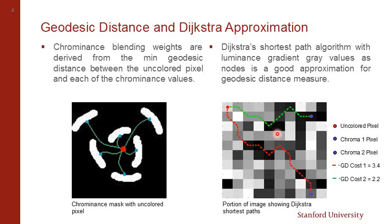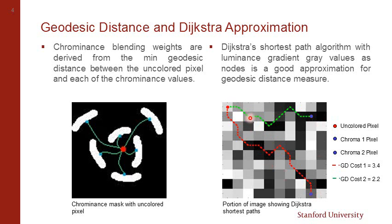As seen in this diagram, the red dot is an uncolored pixel and the blue dots are the colored pixels for which we are going to find the geodesic distance. Dijkstra's shortest path algorithm traverses the path from the uncolored pixel to the colored pixel using the lowest luminance values to arrive at the shortest geodesic distance cost. This portion of the image illustrates that the two chrominance pixels follow different paths to get their geodesic distance cost.